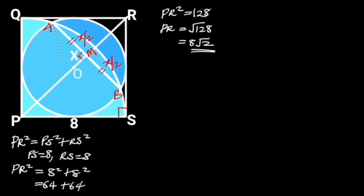Next, let's join AO with a straight line and AP with another straight line, and we will have two right triangles: triangle AOM and triangle APM. Going further, let's observe that AO is the radius of the circle. Since the diameter of the circle is equal to the side length of the square, which is equal to 8, it follows that the radius AO of the circle will be 8 divided by 2, which is equal to 4. Also, AP is the radius of the quarter circle, which is equal to the side length of the square, that is 8.